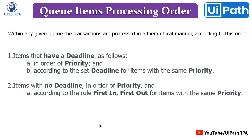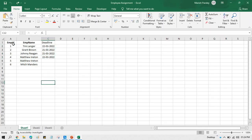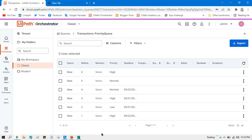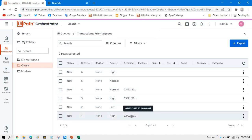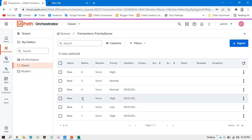In the first scenario, we have six items available in the queue — four with deadlines and two without any deadlines. I have these Q items with six employee IDs. You can see the reference: first item added is first, so first in first out — first, second, third, four, five, six. You can see dates 22nd of March, 21st, 21st, and 22nd. Now I'm going to run this so you can see how these items get processed.